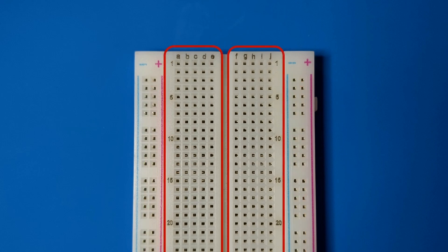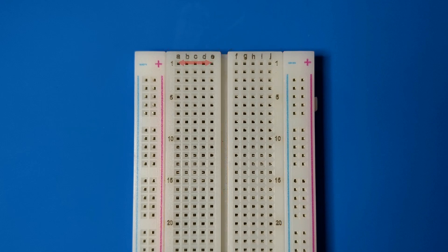The socket strips toward the middle of the breadboard allow components to be connected together without soldering. For example, a pin plugged into row 1 anywhere between column A and E is connected to any other pin on that same strip. On the other side of the divider, the strip located at columns F through J works the same way. This same pattern applies to all the other rows too.